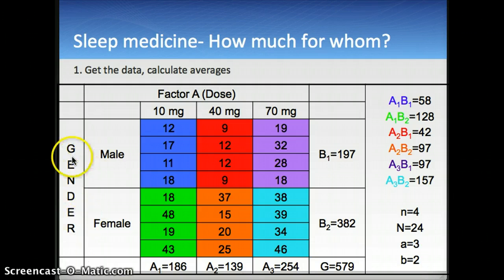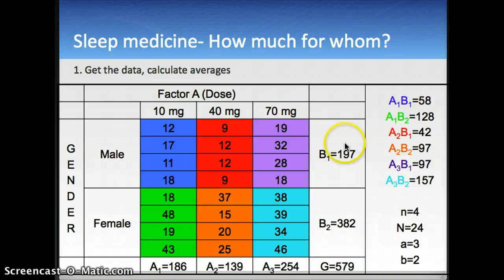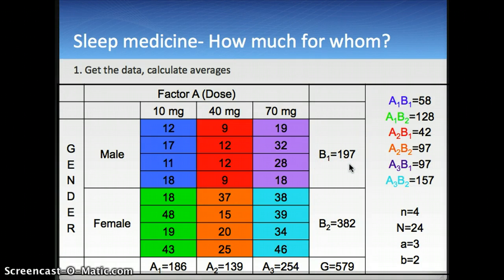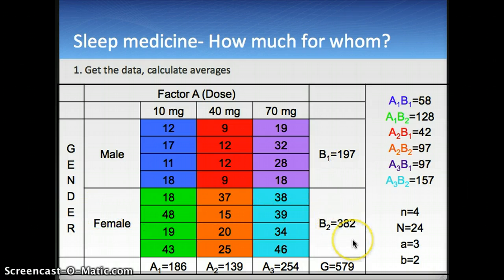For factor B, we look at gender. Males took a total of 197 minutes to fall asleep, while females took a total of 382 minutes to fall asleep.